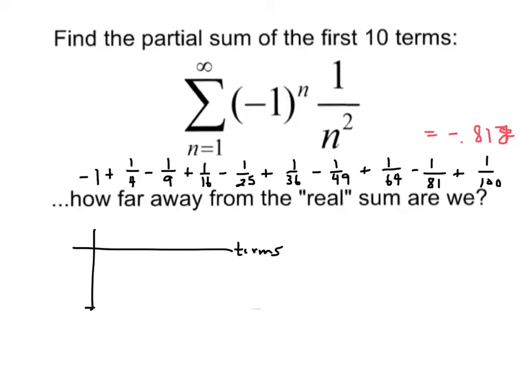And value over here. So the first term, n equals one, was negative one. N equals two. I added one-fourth, so it was 0.75. I'd subtract one-ninth.